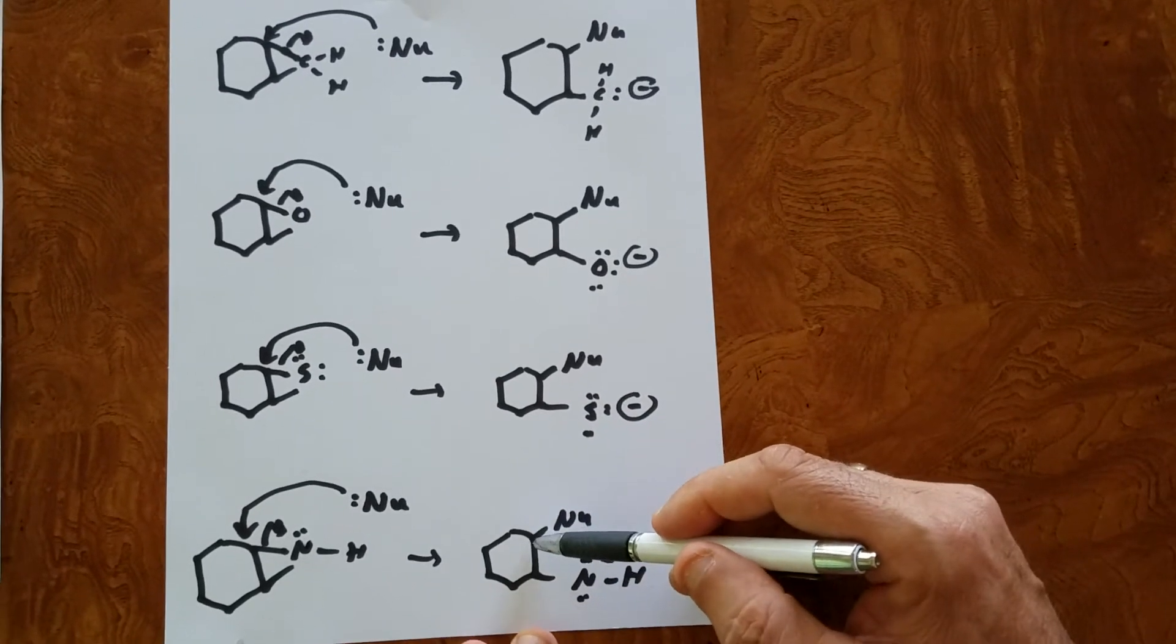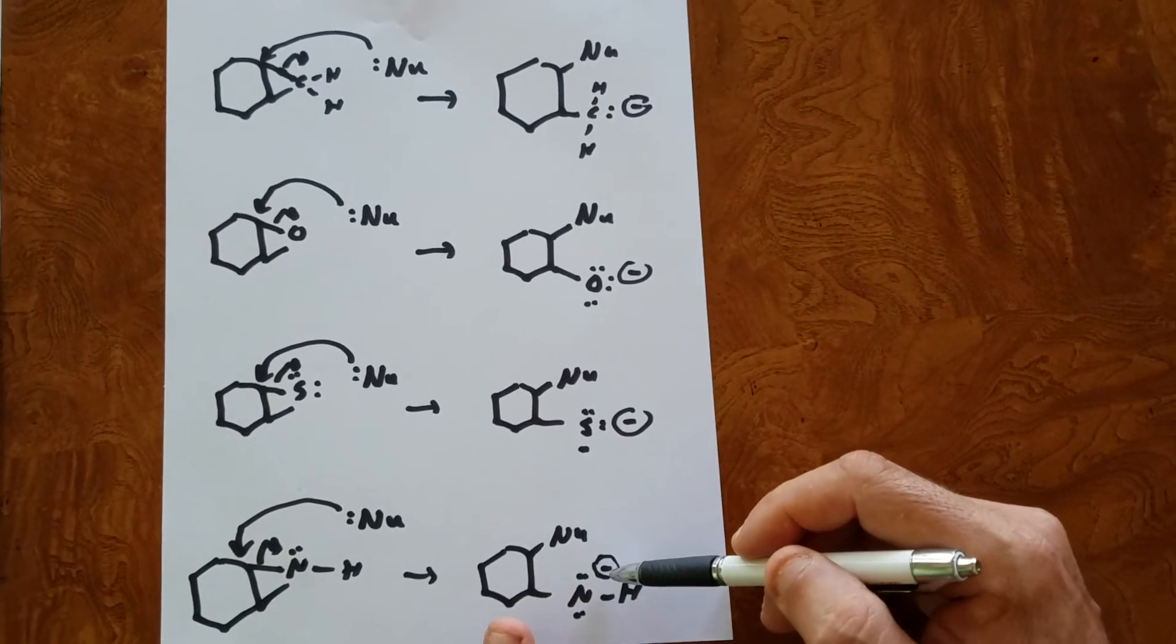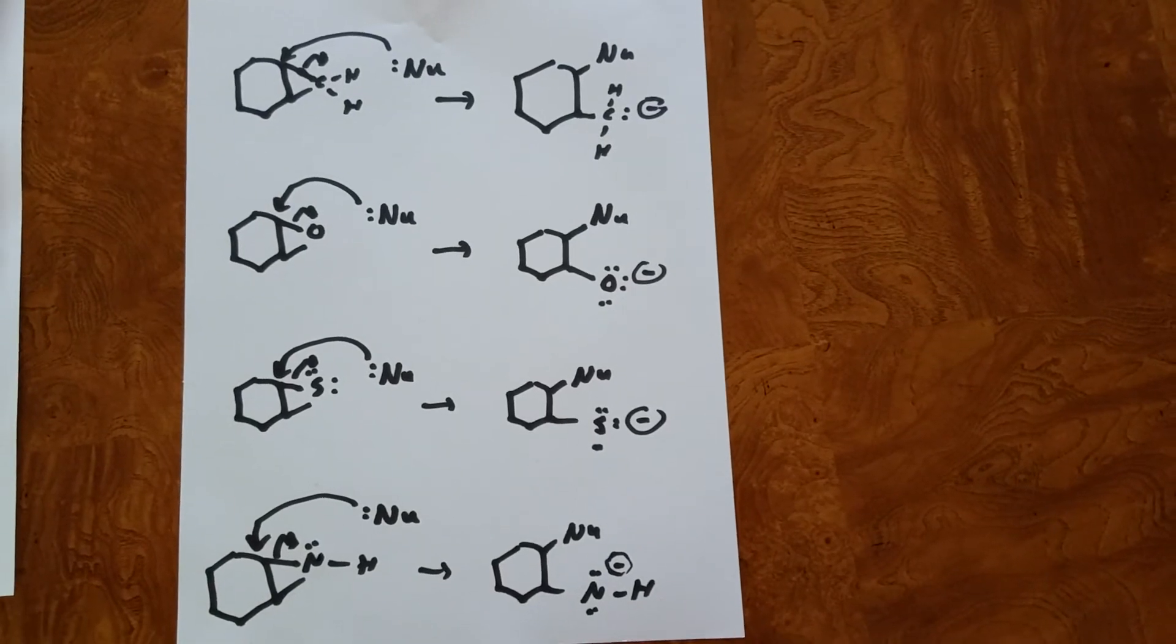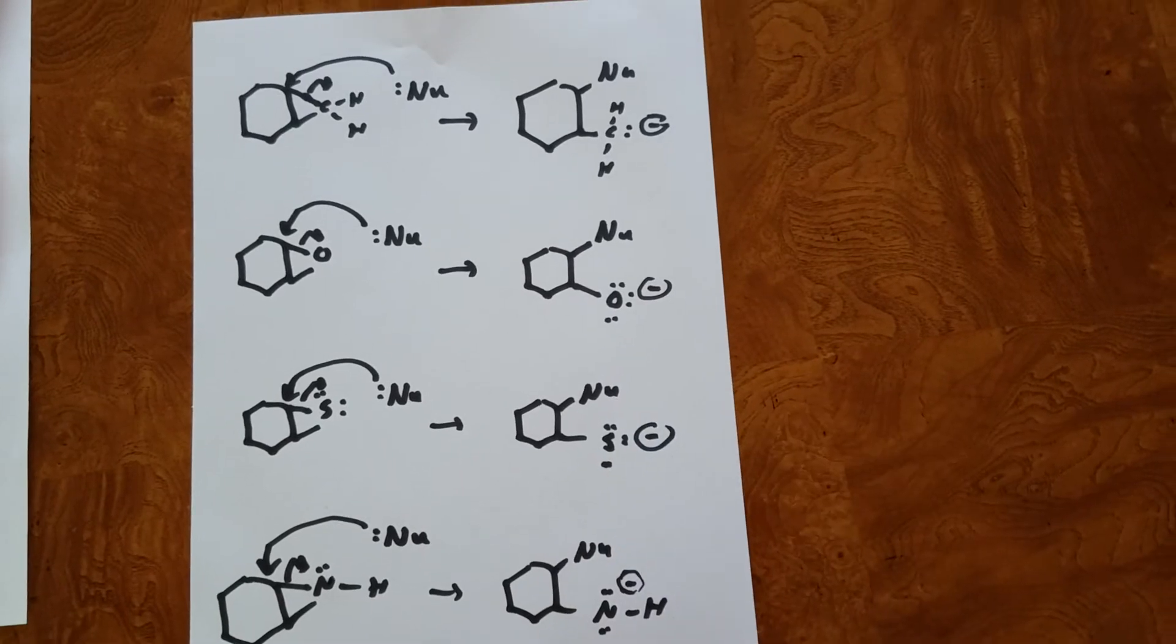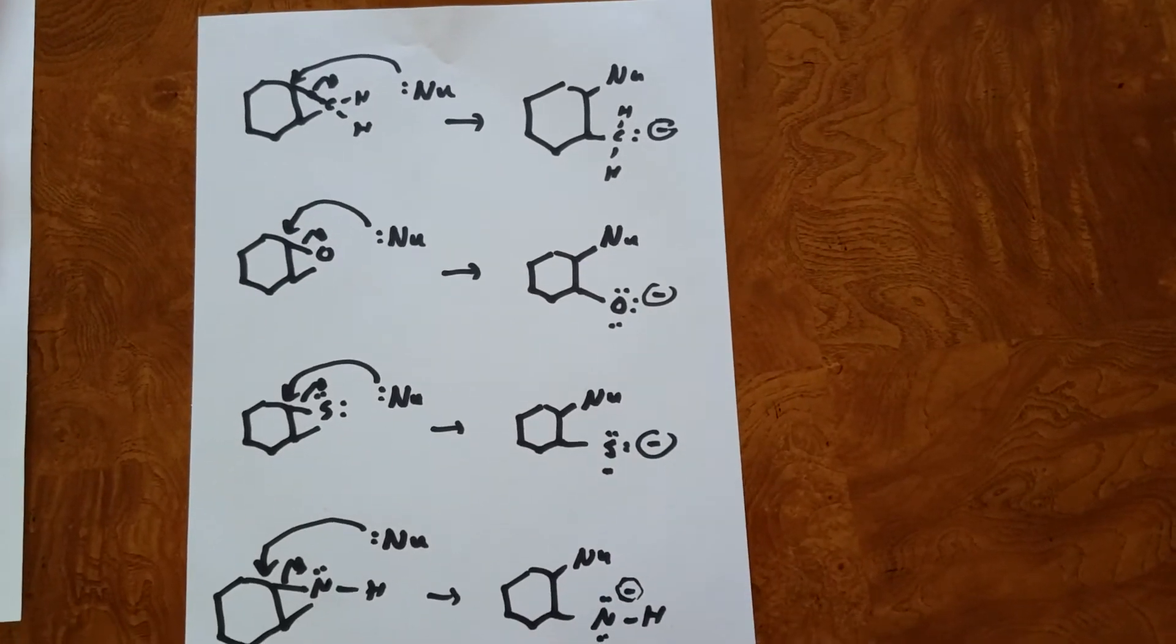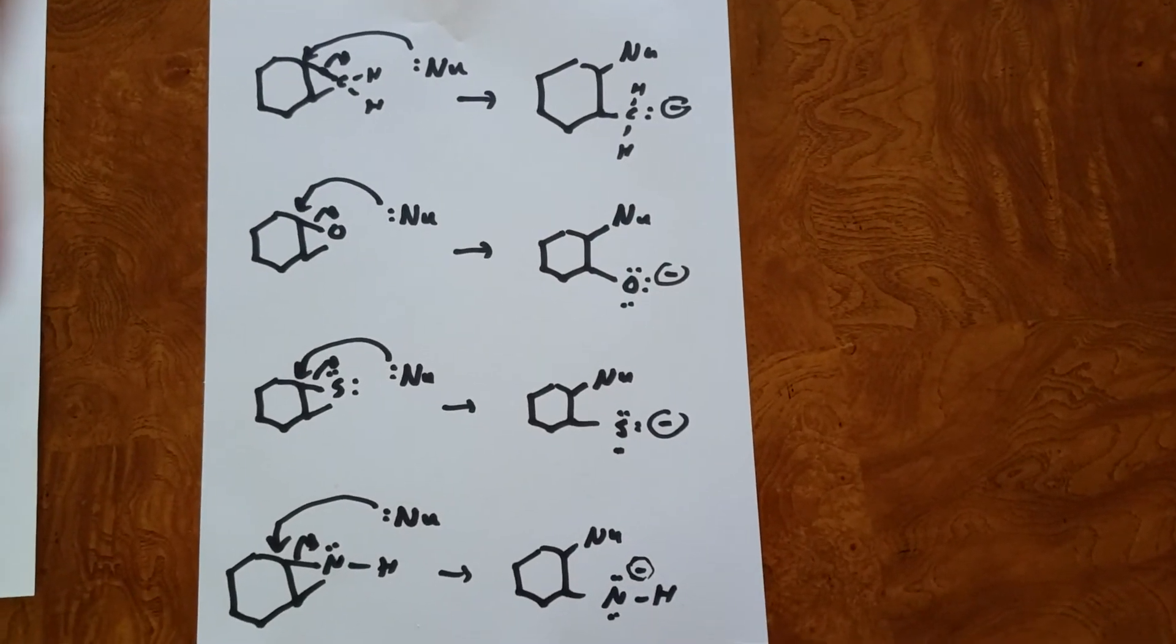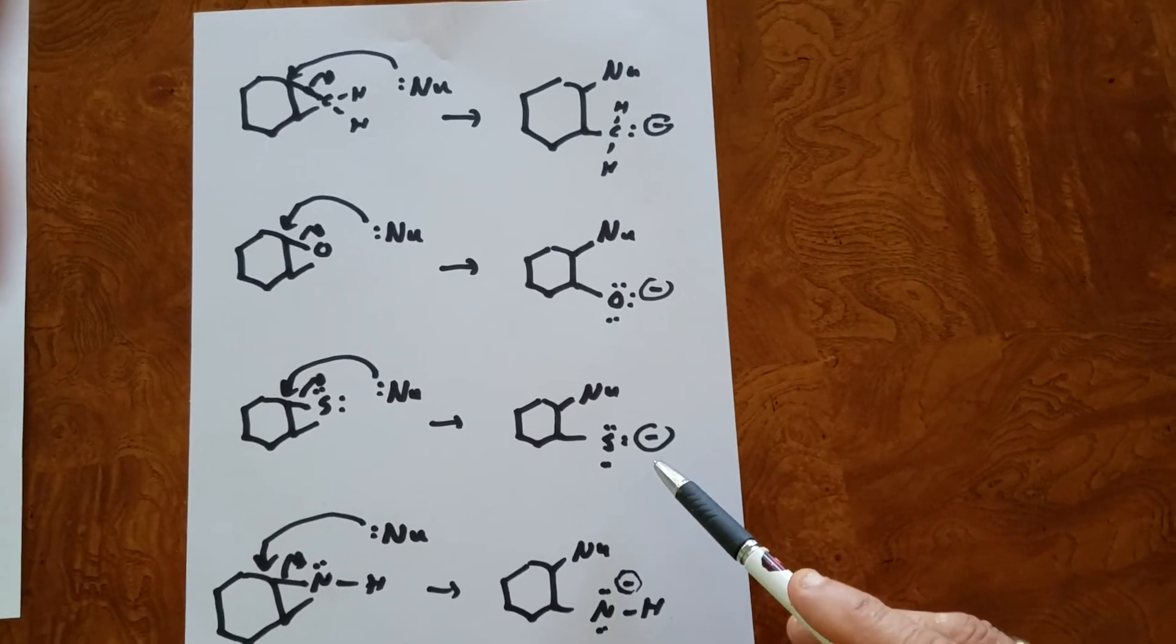So therefore, that would be nitrogen as far as a leaving group. But if you're looking at size, sulfur is larger. Because it's larger, it's going to be able to spread out the negative charge better and be more stabilized.